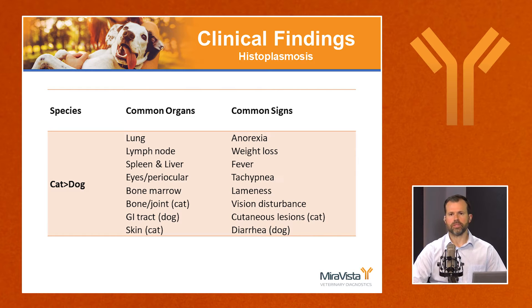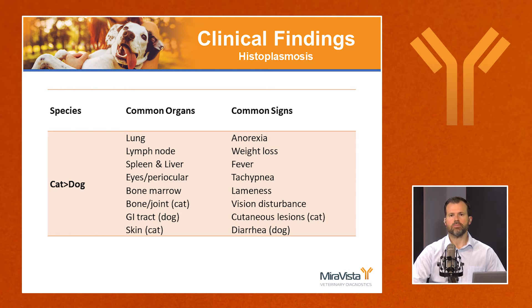Cats are more often affected than dogs — about four times as often. Lung is a very common organ involved, and disease can be single-organ or multisystemic. Other commonly involved organs include lymph node, spleen and liver, eyes, bone marrow (especially in cats), bone and joint (primarily cats), GI tract (mostly in dogs), and skin involvement, which is much more common in cats.